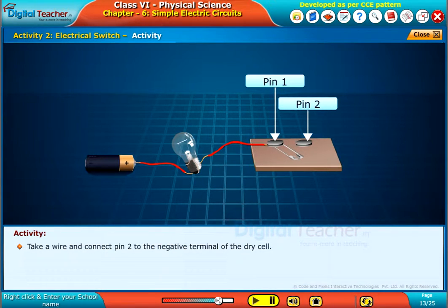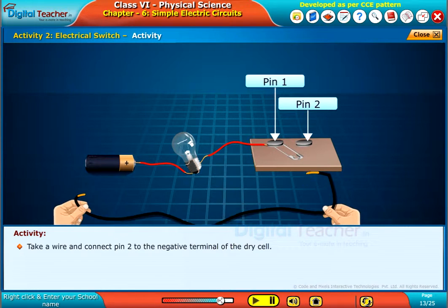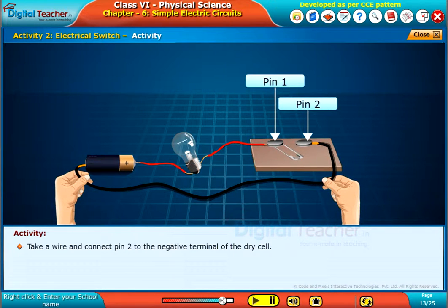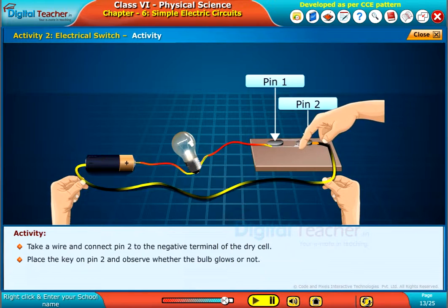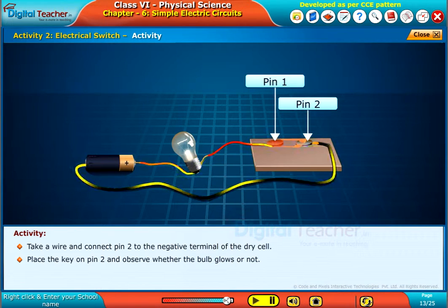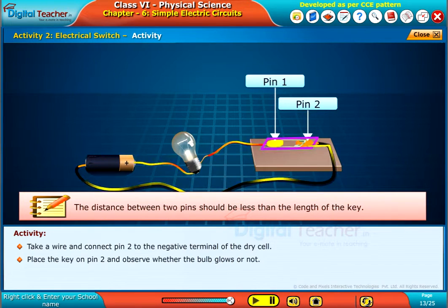Take a wire and connect pin 2 to the negative terminal of the dry cell. Place the key on pin 2 and observe whether the bulb glows or not. Note, the distance between two pins should be less than the length of the key.